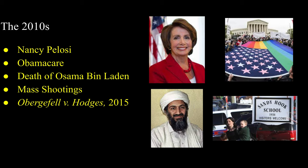While Obamacare had some great pros, it also greatly influenced the deepening divide between the parties. Early in Obama's term, he also successfully orchestrated the mission that would end the life of Osama Bin Laden. One thing that specifically haunted Obama's time in office was the prevalence of many mass shootings—Sandy Hook Elementary School was perhaps one of the most heartbreaking, with the shooter claiming the lives of 27 people, the majority being children under the age of 10. Another topic of hot debate covering the last year of the Obama presidency was the ruling on Obergefell v. Hodges, which effectively legalized gay marriage.